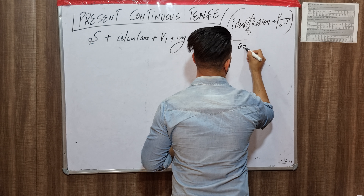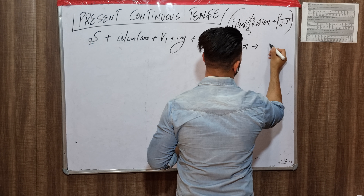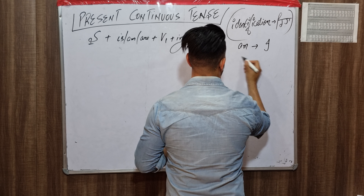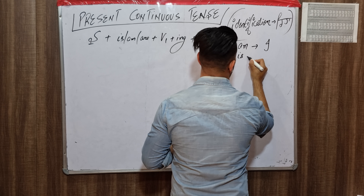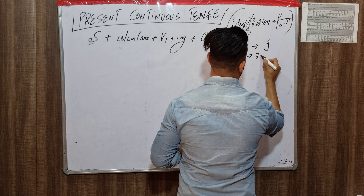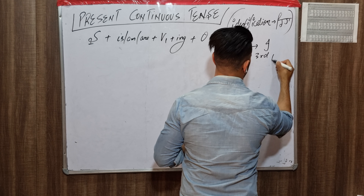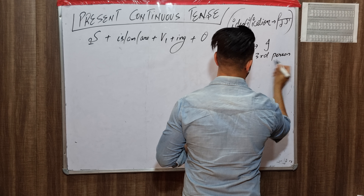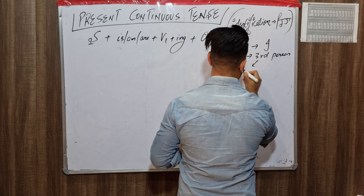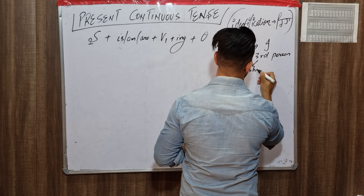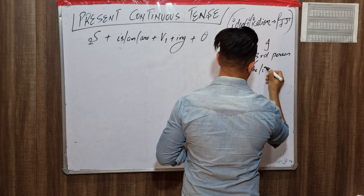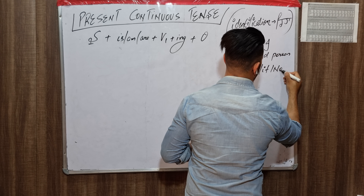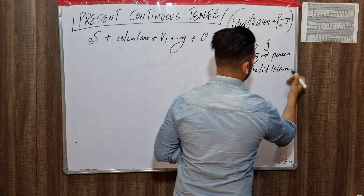'Am' is always used with 'I.' 'Is' is used with third person singular, which means he, she, it, and also with a noun — meaning a name.